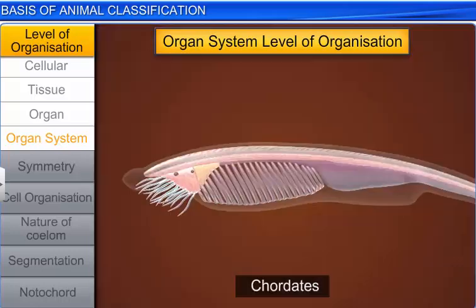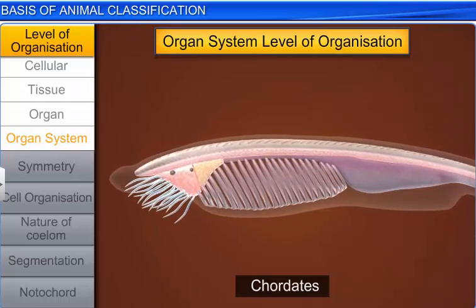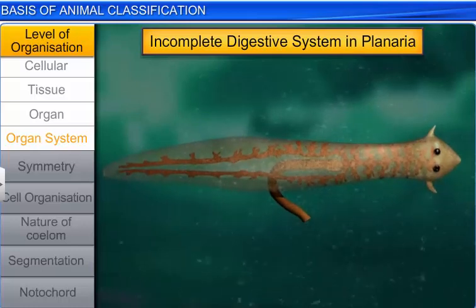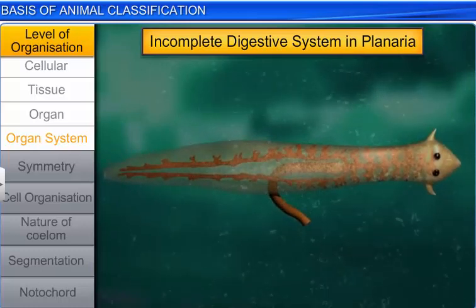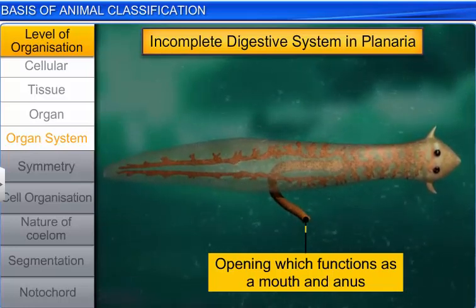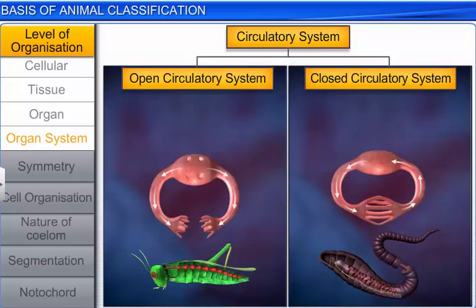Organ systems can also differ in complexity in various animal groups. For example, platyhelminthes have an incomplete digestive system, where a single opening outside the body serves as both the mouth and the anus. You will also find two types of circulatory systems in animals: open and closed.